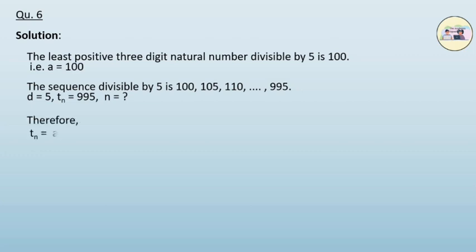Therefore, our formula t_n is equal to a plus n minus 1 into d. Substituting, 995 is equal to 100 plus n minus 1 into 5.